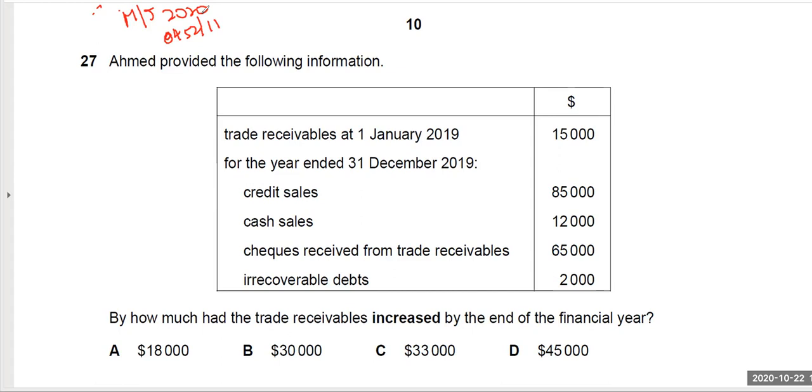This is question 27. Ahmad provided the following information. We're given the balances: trade receivables, credit sales, cash sales, checks received from trade receivables during the year, and irrecoverable debts written off. Now look at what they asked you. By how much had the trade receivables increased by the end of the financial year?